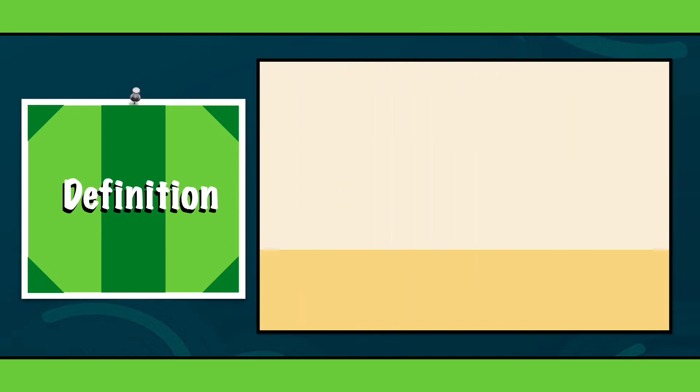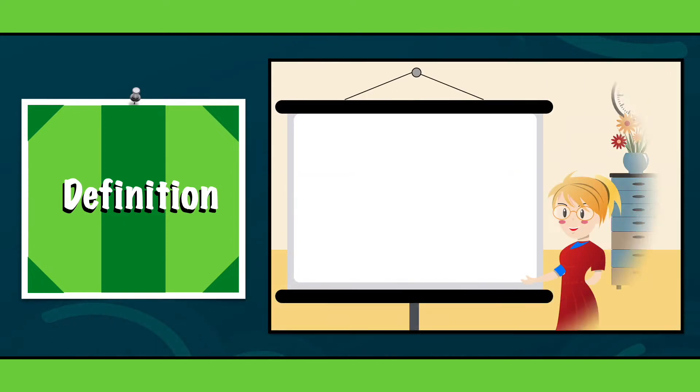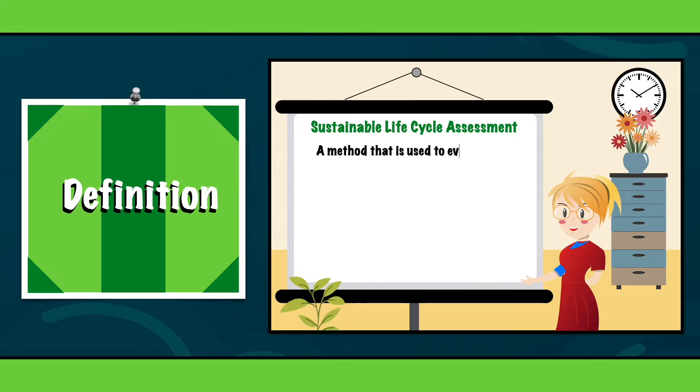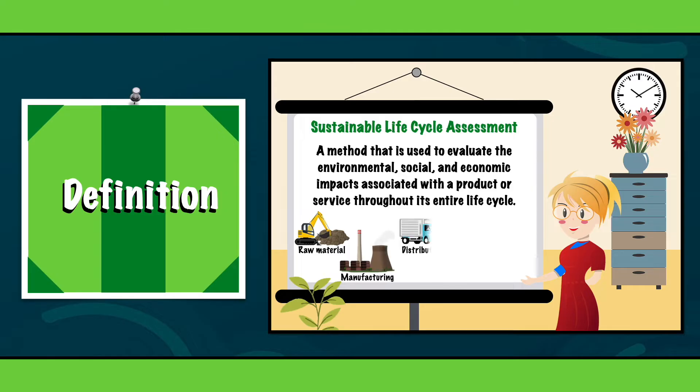In order to get a better understanding about SLCA, we will first look at its definition. In essence, SLCA is a method that's used to evaluate the environmental, social and economic impacts associated with a product or service throughout its entire life cycle, from raw material extraction to manufacturing, distribution, use and disposal.